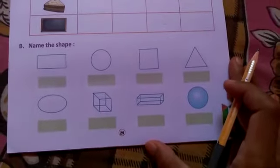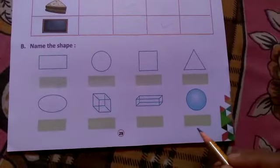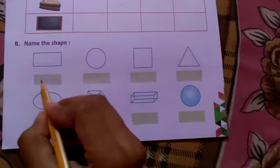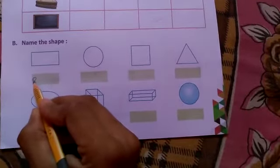Question number B is name the shape. Here we have to write the name in boxes. First is rectangle, so in the first box we will tick the rectangle.